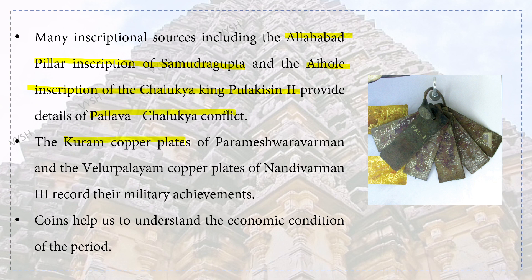The Kuram copper plates of Parameshwarman and the Velurpalayam copper plates of Nandivarman III record their military achievements. Coins help us understand the economic condition of the period. The important sources are the Allahabad inscription of Samudragupta, the Aihole inscription of Pulakeshin II, the Kuram copper plates of Parameshwarman, the Velurpalayam copper plates of Nandivarman, and some coins.